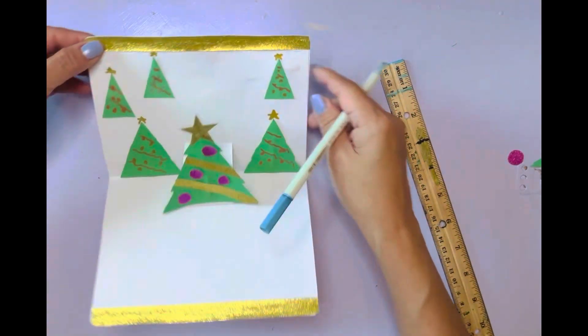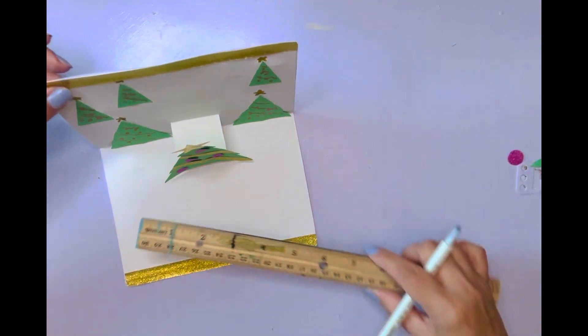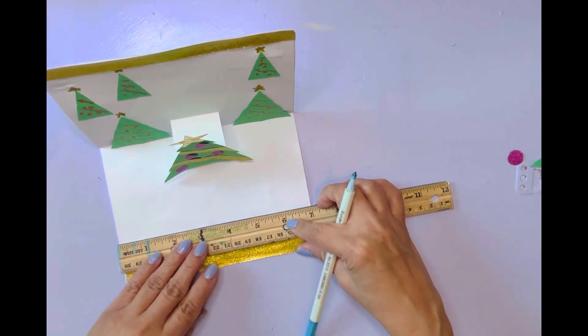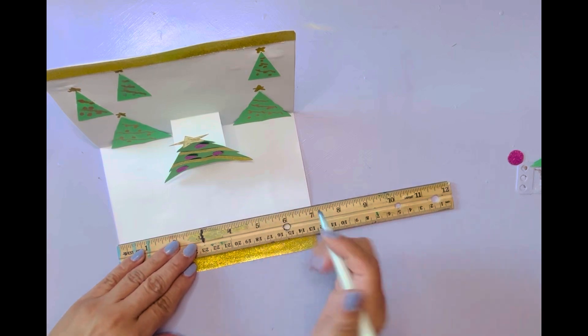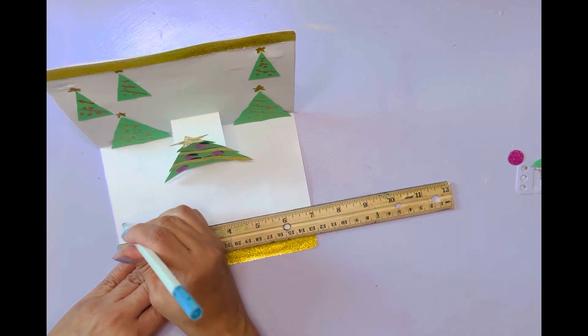I went ahead and put a little border with gold glitter paper, and now I'm going to write my message, so I always put a ruler first, and then I write my letters. So you can write them in print or cursive. I like cursive.